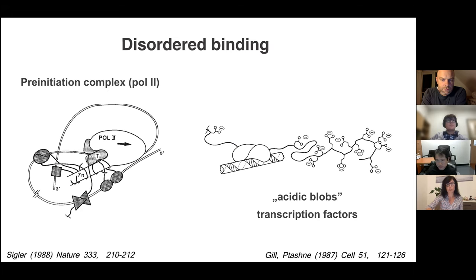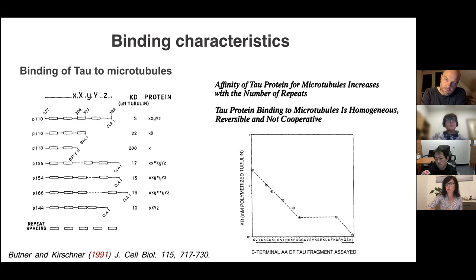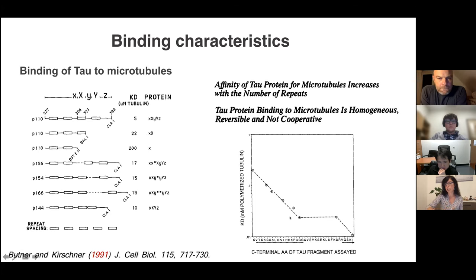We knew quite a lot about binding characteristics already around 1991, before the whole IDP field emerged. The example I'm using here is the binding of tau to microtubules. You can see the characteristics described in that paper: they observed a kind of length-dependent binding—a stepwise binding—so you have a change when you start truncating, then stable, then a change again. It depends on the number of repeats, and it's not cooperative.